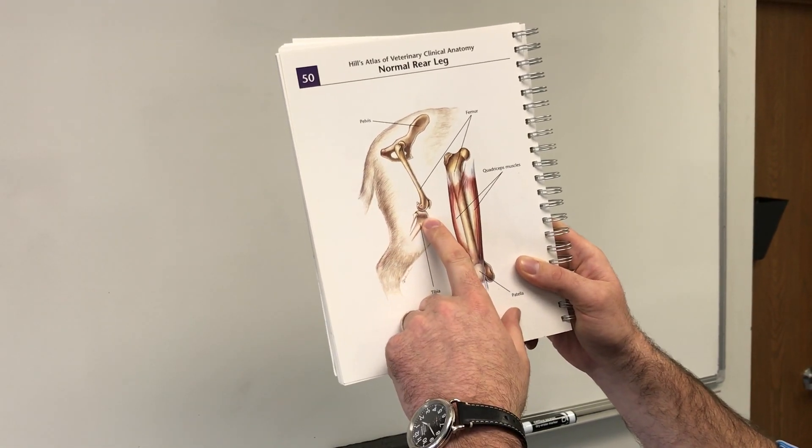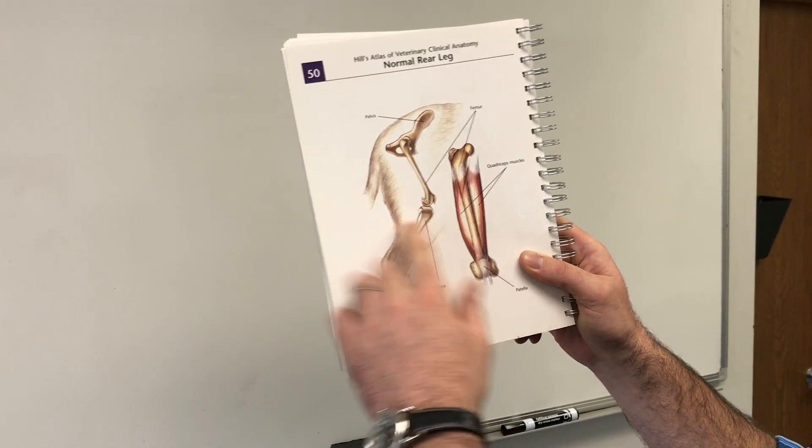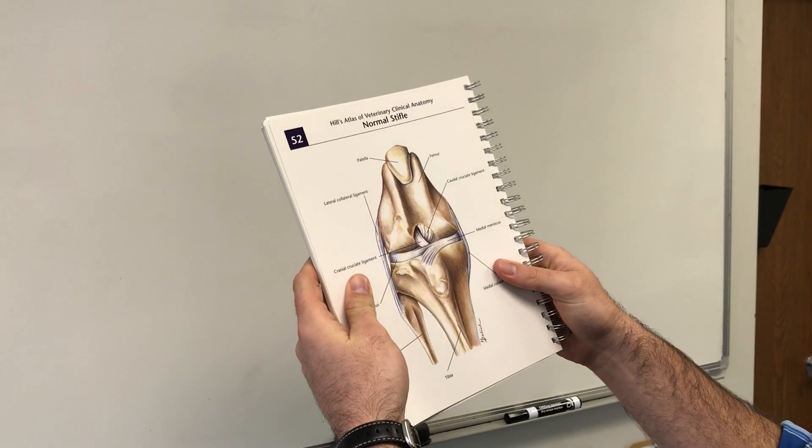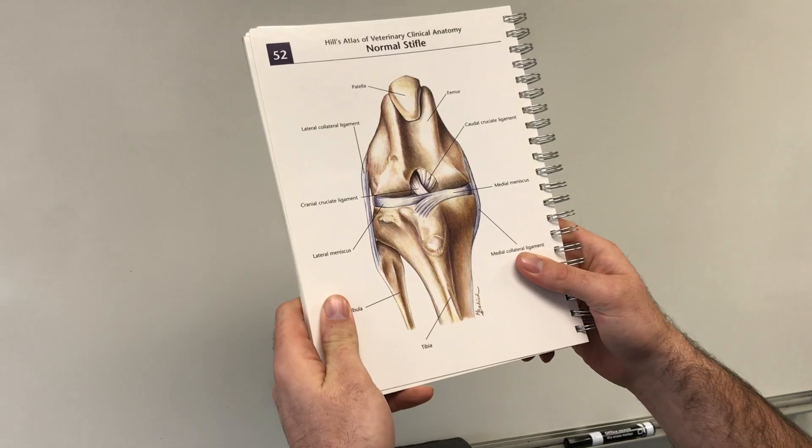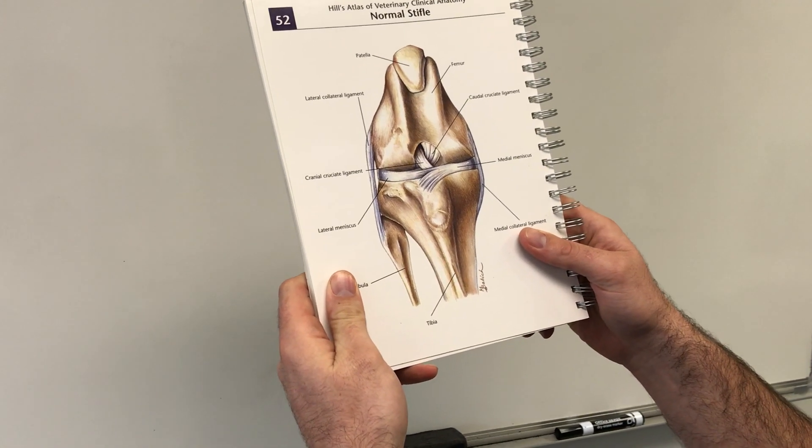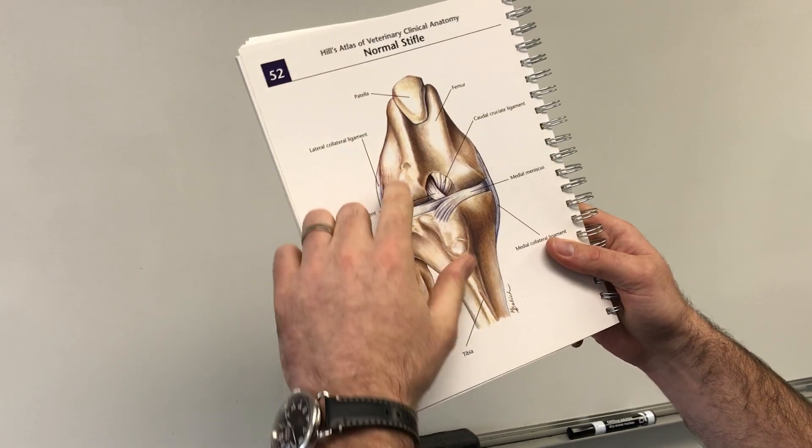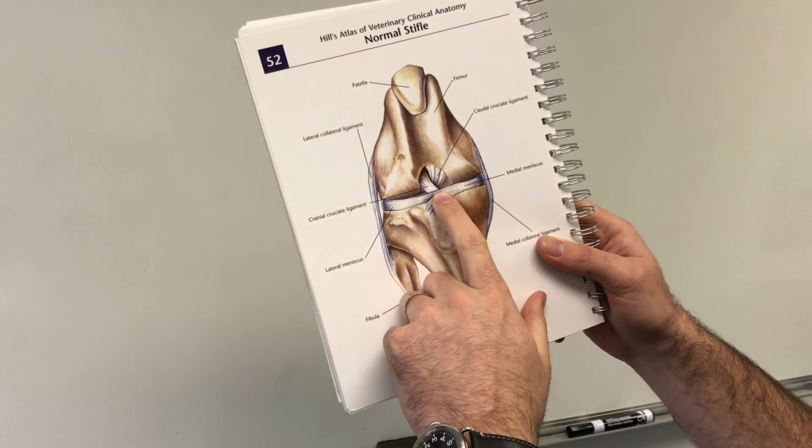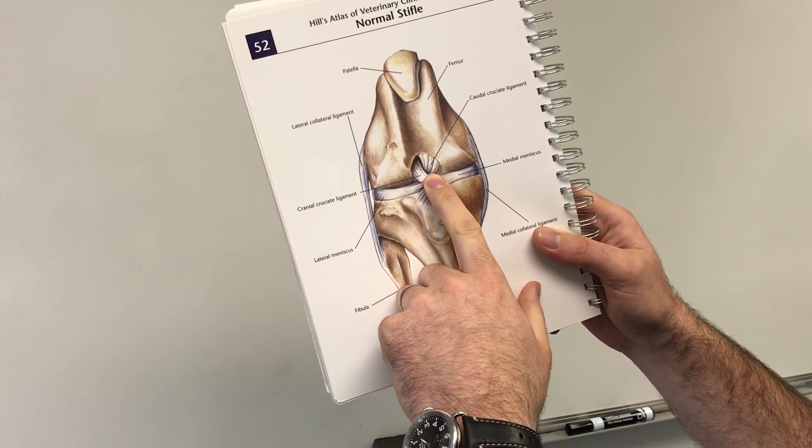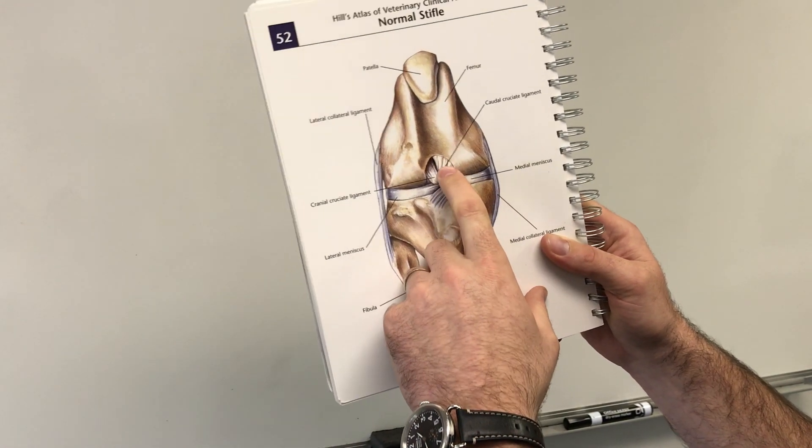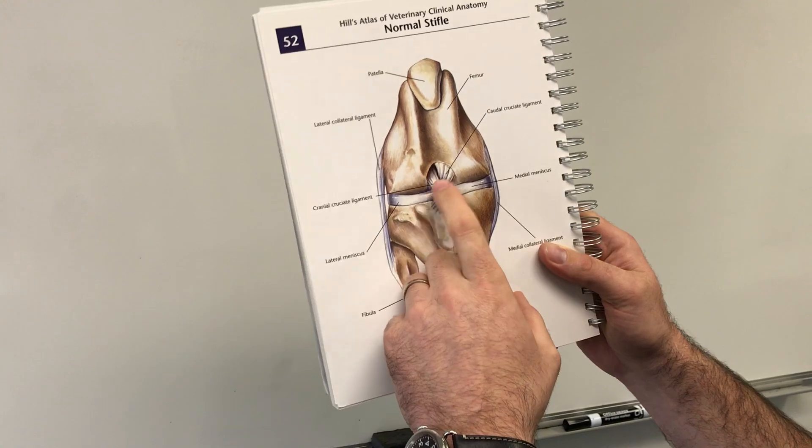Let's focus in on the stifle or on the knee. If we zoom in on this, this is the normal anatomy of the dog knee. It's very similar to the human. You have a kneecap, you have a femur, tibia, your ACL and your PCL sit inside the knee, crisscrossing and stabilizing the knee.